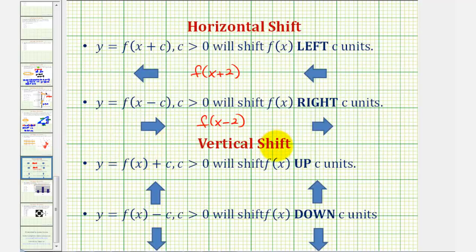And now for the vertical translation, if we have f of x plus c, the graph is shifted up c units. So if we had f of x plus two, or in our case f of x plus three, this would shift the graph up three units.